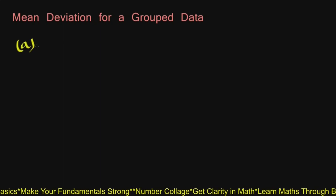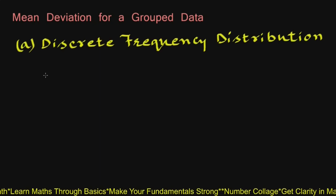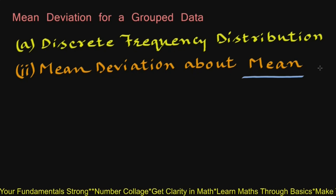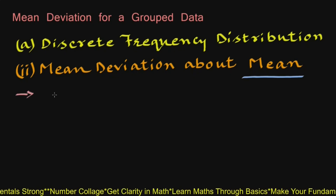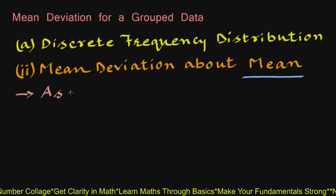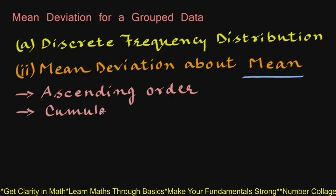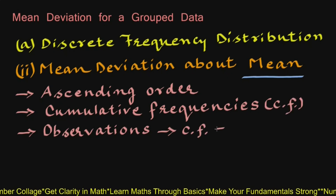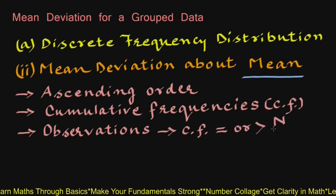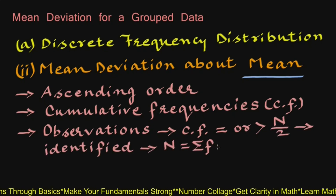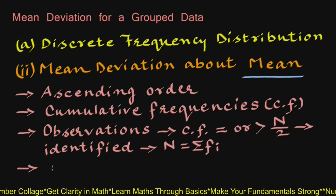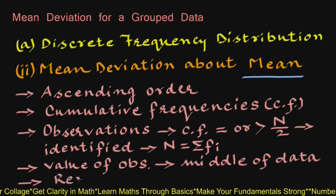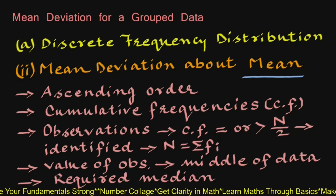Now for a discrete frequency distribution, let us see how to find mean deviation about the median. First, the observations are arranged in ascending order. After that, cumulative frequencies are obtained. Then the observation whose cumulative frequency (cf) is equal to or just greater than N/2 is identified, where N is the sum of frequencies (summation fi). This value of observation lies in the middle of the data and is the required median. Let us understand this by solving an example.